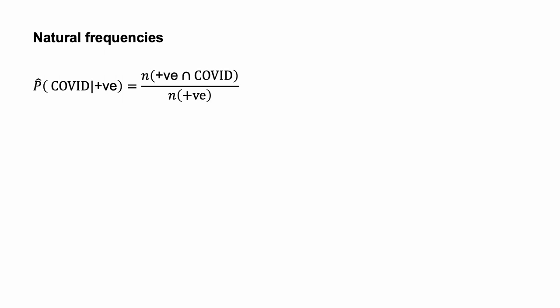We can see that the probability that we have COVID-19 given we tested positive equals the number of people who have COVID-19 who have tested positive, divided by the total number of positive tests, which equals 9 divided by (9 plus 89), which equals 0.092. Cosmides and Tooby, 1996, first proposed using natural frequencies in this way. We derive natural frequencies by observing cases representatively sampled from a population.